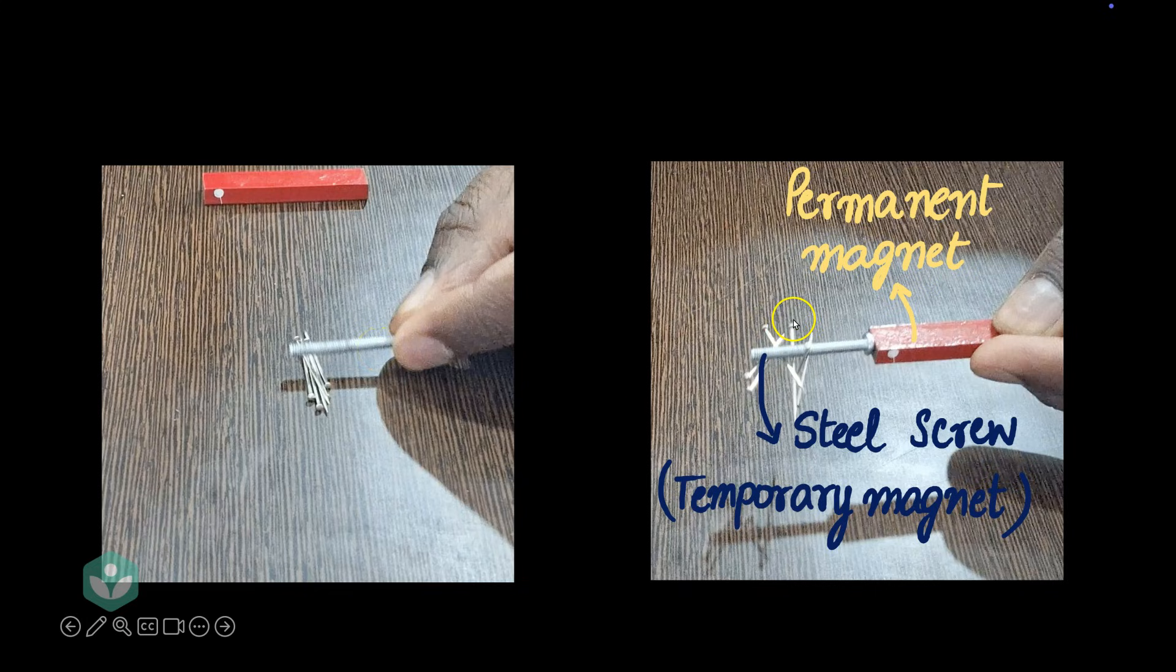Okay, let's review what we just saw. We saw that when the steel screw was far away from the permanent magnet, it could not act as a magnet. But we noticed when the steel screw was close to the permanent magnet, the steel screw itself became a temporary magnet. This is called induced magnetism.